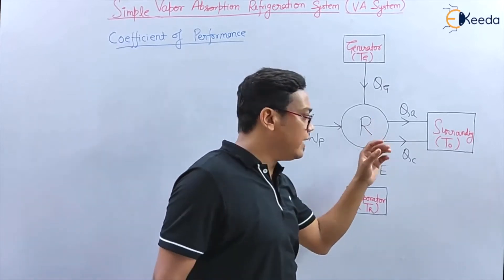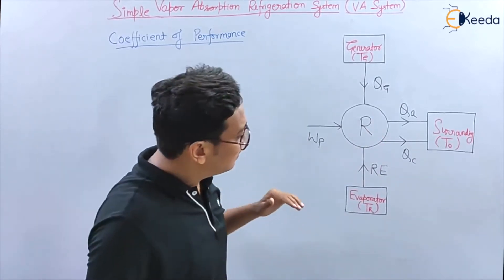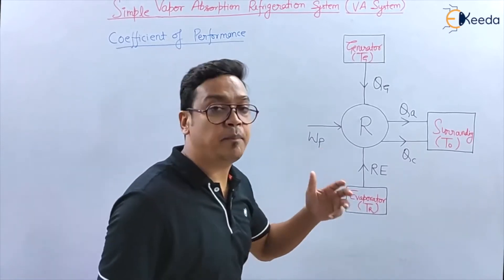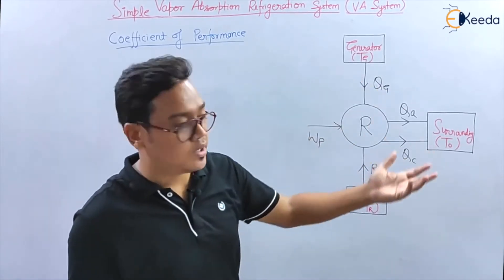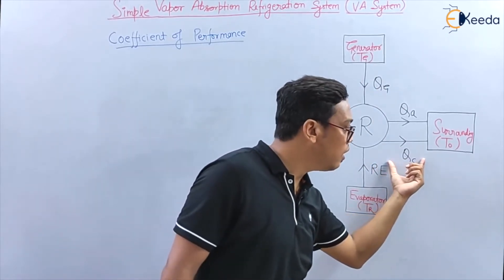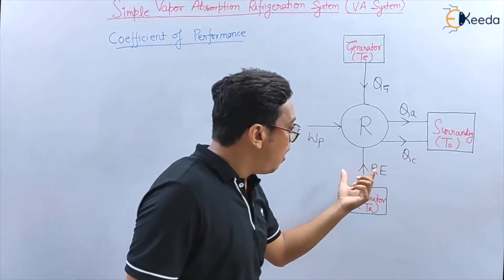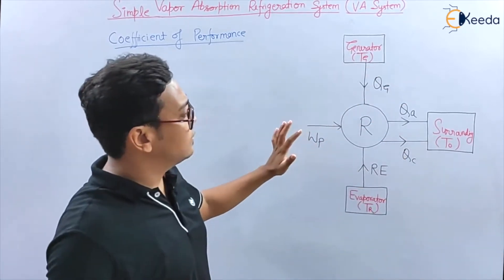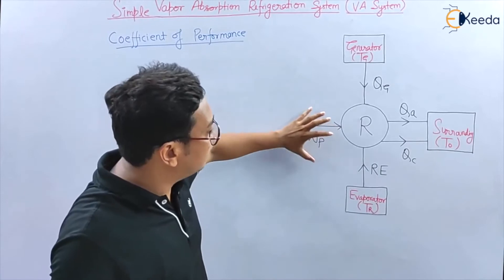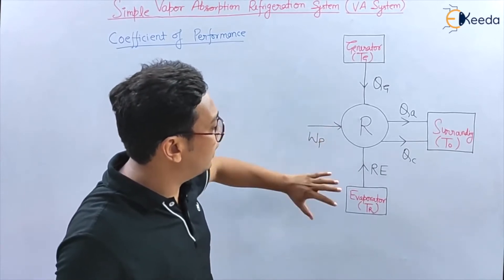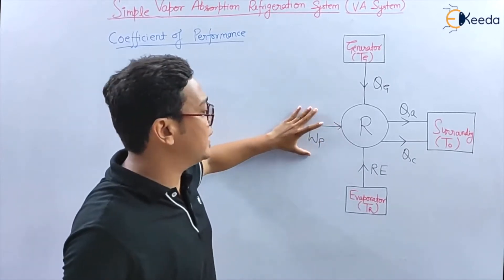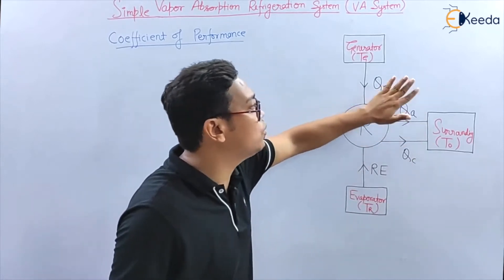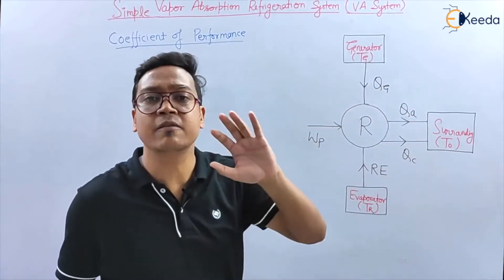After that, in the condenser, heat was rejected from the ammonia vapour. All these processes have been explained, along with all the parameters like work input, RE, QC, QA, and QG, which I have already explained.